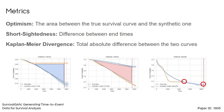To quantify these three phenomena, we propose three new metrics. The first is optimism, which is the signed area between the true survival curve and the synthetic one — equal to a scaled difference in expected lifetimes. Zero is perfect, one is maximally optimistic, and minus one is maximally pessimistic. The next is short-sightedness, the scaled difference between the two end times. Finally, the Kaplan-Meier divergence gives the total absolute difference between the two curves, for cases where optimism and short-sightedness are both zero but the curves still don't match.